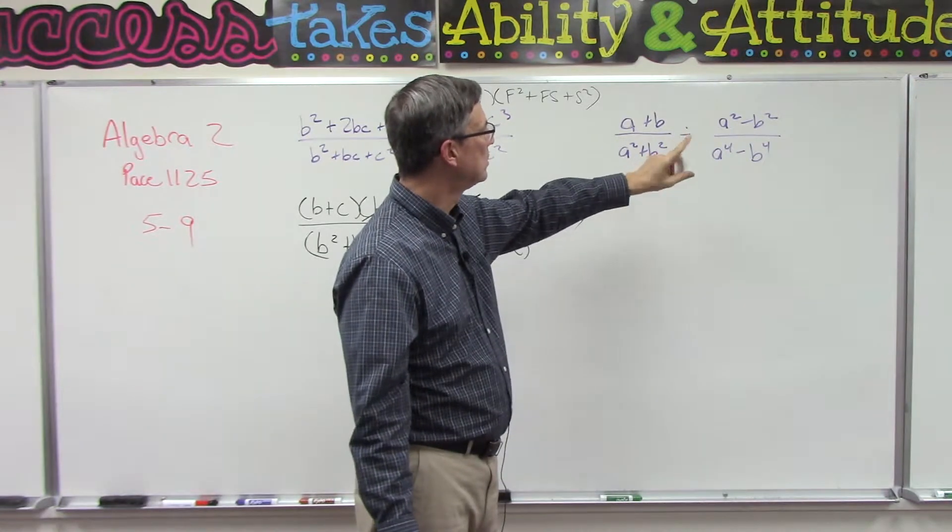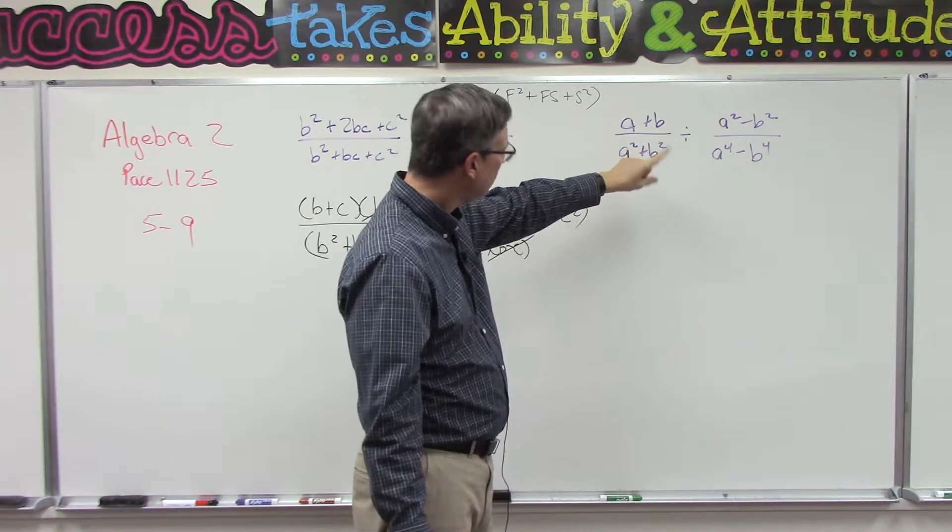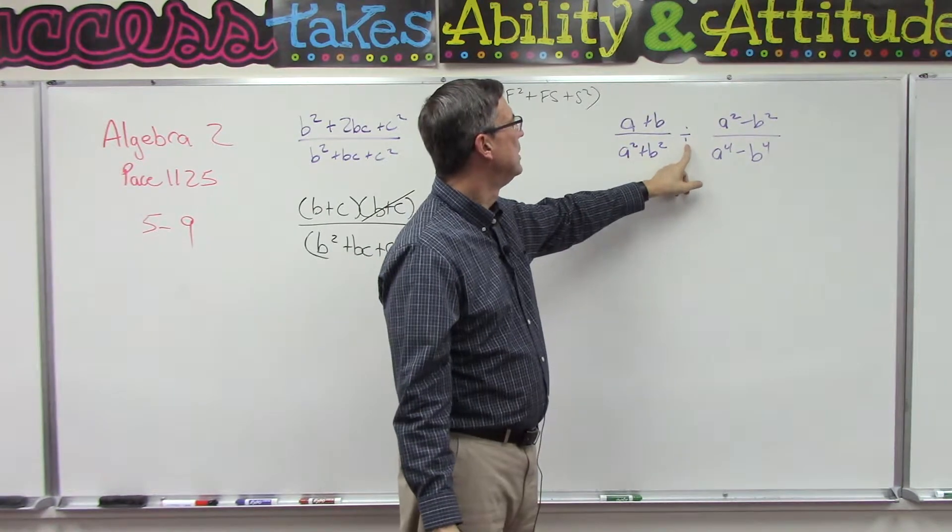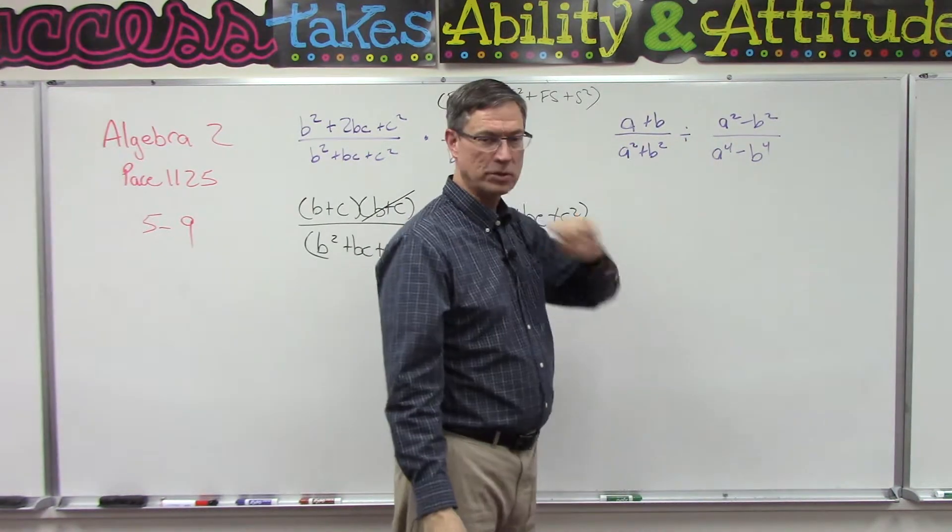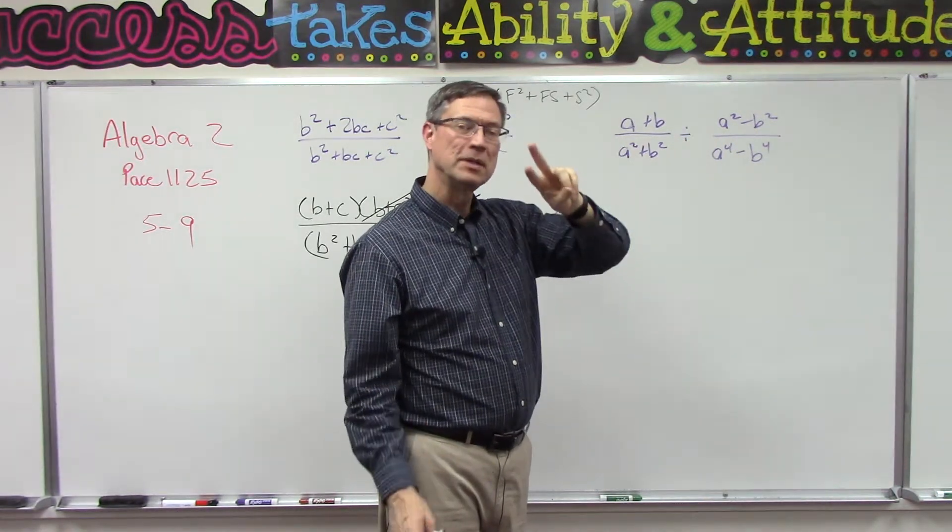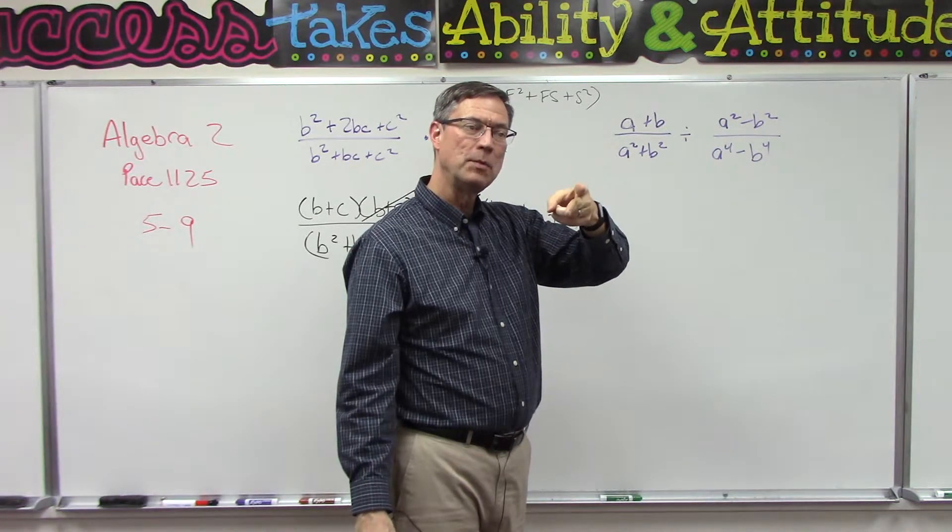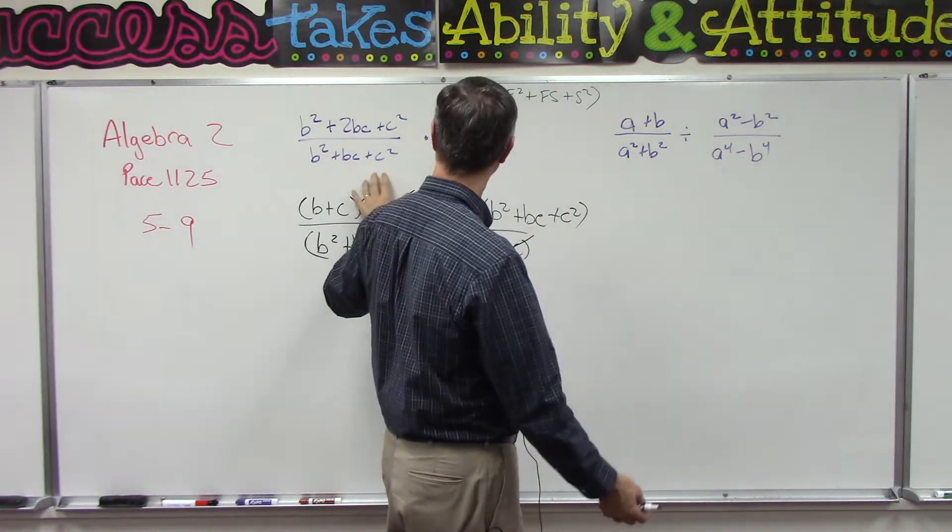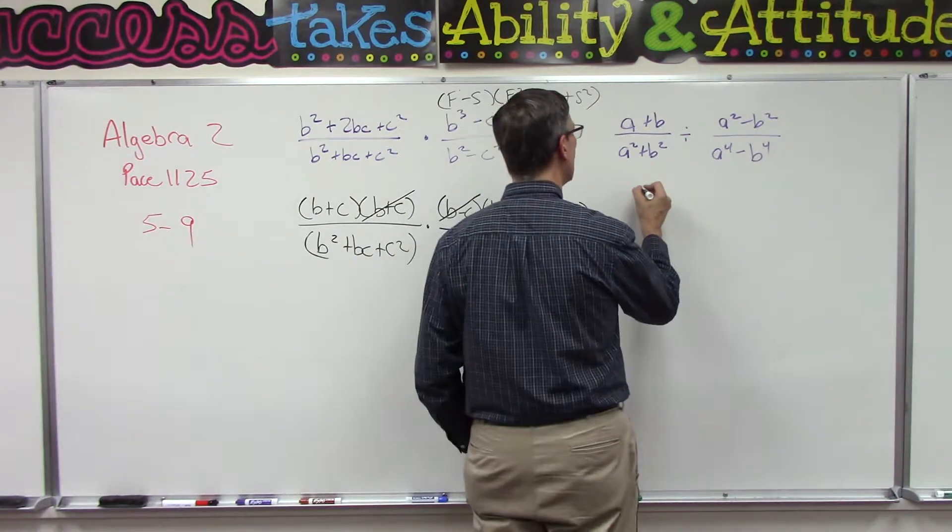Let's look up here because there's a trick on this. Two things: one is when we have divided by a fraction, we take the second fraction and we flip it over and then we multiply, and then it's exactly like this problem here.